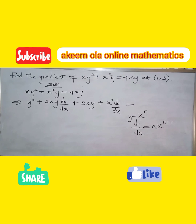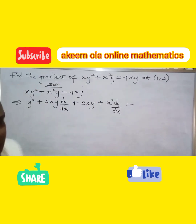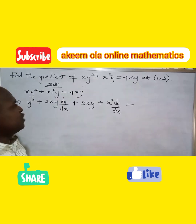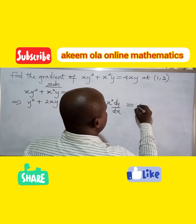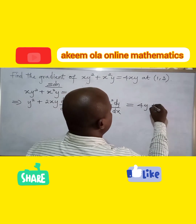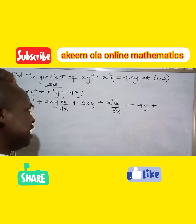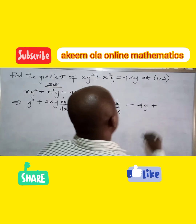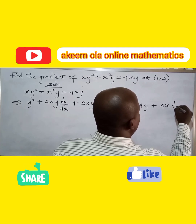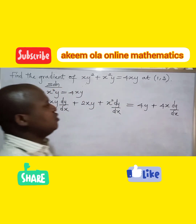On the right-hand side, differentiating 4xy with respect to x gives 4y, and differentiating with respect to y gives plus 4x dy/dx.